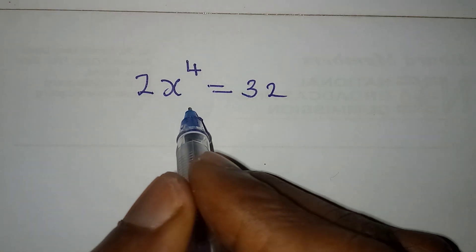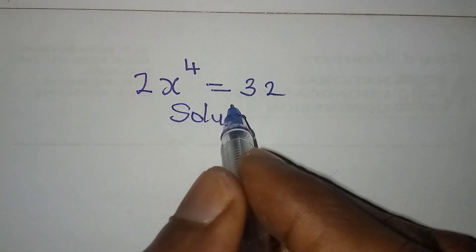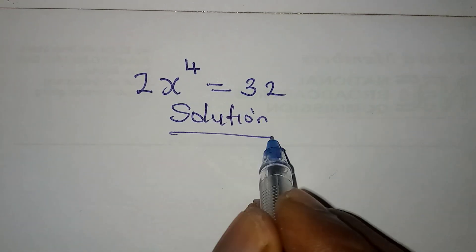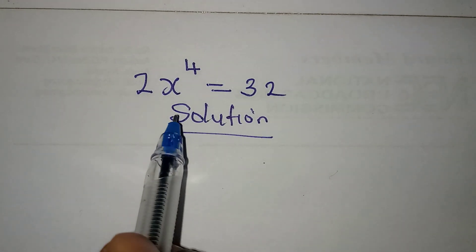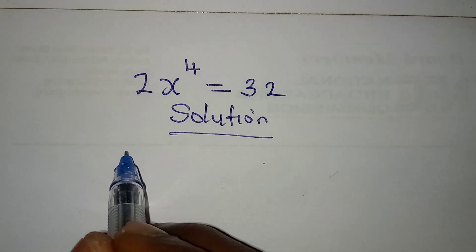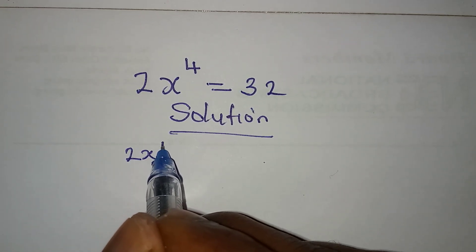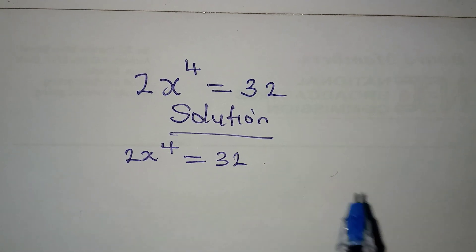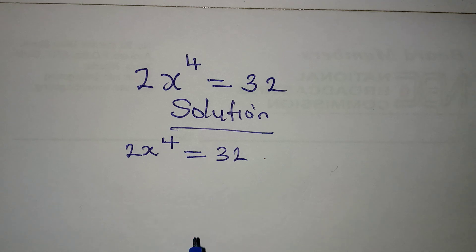Hello everyone, let's provide the solutions to this problem very quickly. We are to solve everything, meaning we are to bring out all the solutions. We have 2x to the power of 4 equal to 32.